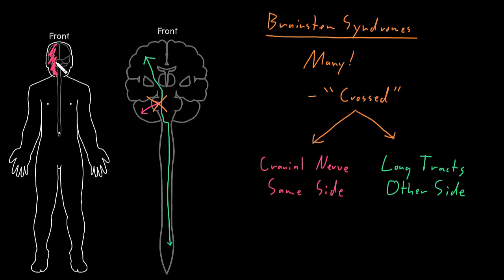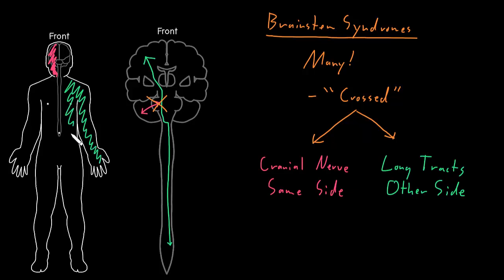For example, this could be a motor nerve moving the muscles of the face, and there could be weakness on that side of the face. Or this could be a somatosensory nerve carrying somatosensory information from the skin of the face on the right side back into the brainstem. So we can have weakness or somatosensory loss on the right side of the face from this cranial nerve being involved as it enters or exits the brainstem. But if this long tract is involved on the right side of the brainstem, we won't see abnormalities on the right side of the body, because it crosses below to serve the left side of the body.